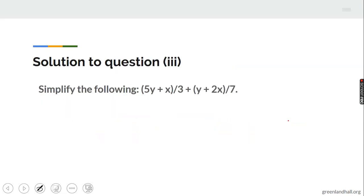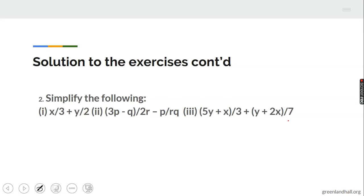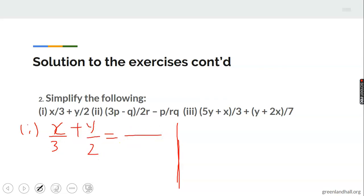The last exercise was to simplify algebraic fractions. For X over 3 plus Y over 2, find the LCM of 3 and 2, which is 6. This gives 2X plus 3Y over 6, because 6 divided by 3 gives 2 multiplied by X, and 6 divided by 2 gives 3 multiplied by Y.